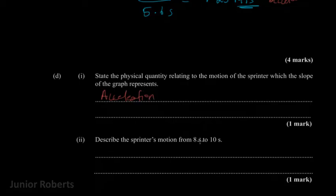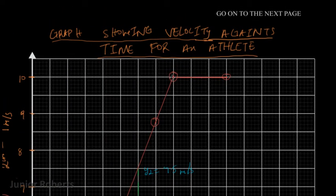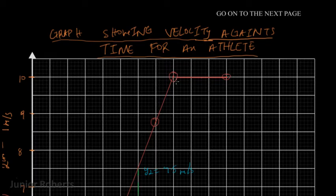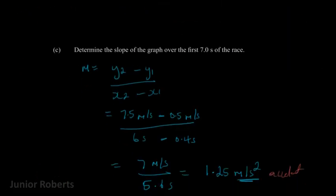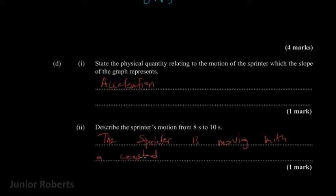The question says: describe the sprinter's motion from 8 seconds to 10 seconds. Looking back at the graph, from 8 seconds to 10 seconds we have a flat horizontal line, which indicates the sprinter is moving with a constant velocity. In this case she's moving at a constant velocity of 10 meters per second.